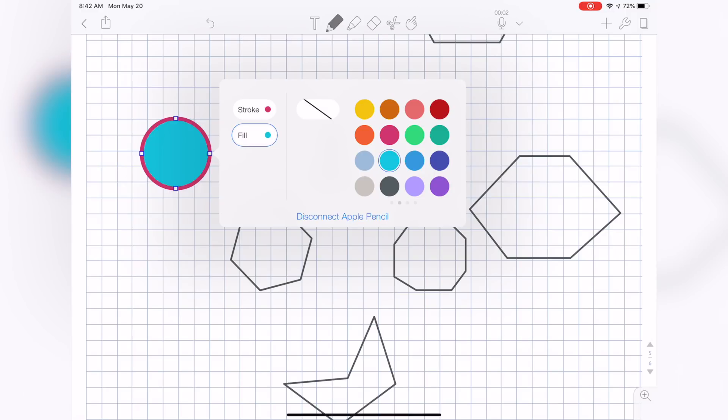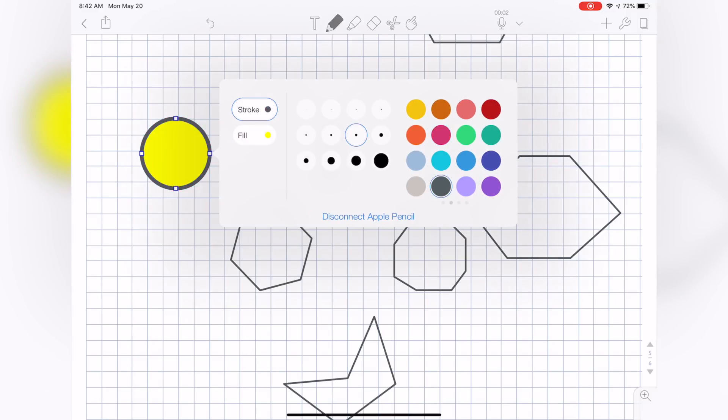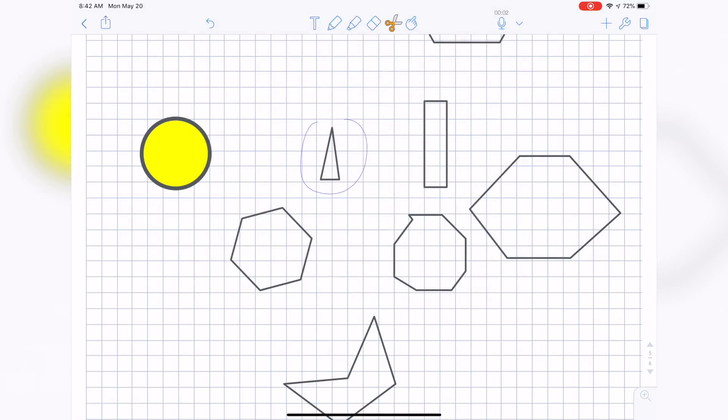But now there is a fill, so I can make the fill whatever I want. We'll make it yellow, we'll make the stroke black-ish, and then we'll just drag over another shape.